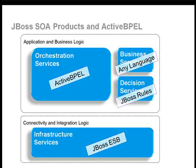If we layer on the different products: Active Beeple will prominently be used as the orchestration service container. The business services will be provided by any language — Java, .NET, Perl, or PHP — as long as there's a WSDL-defined interface. Decision services providing dynamic business rules will be handled by JBoss Rules. The underlying connectivity and integration logic will be handled by JBoss ESB, providing infrastructure services to our application and business logic layer.